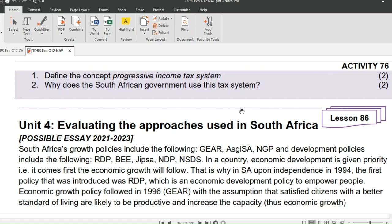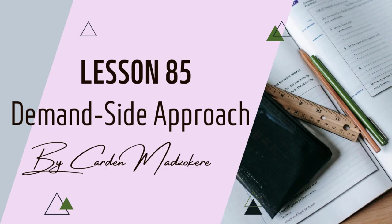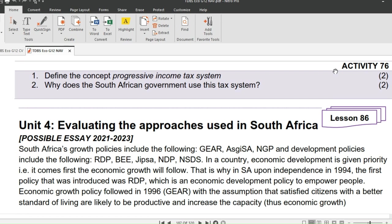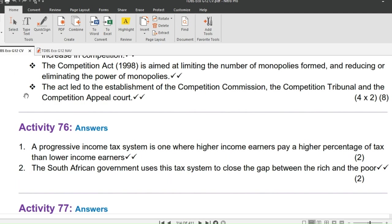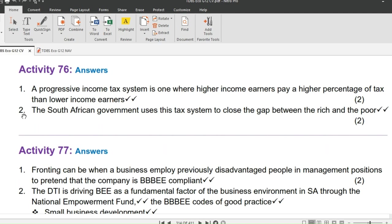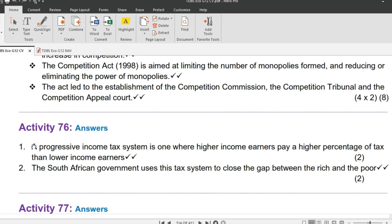As usual, we will start off with our homework activity 76 given in lesson 85, linked down below. Question 1: Define the concept Progressive Income Tax System, 2 marks. A Progressive Income Tax System is that which charges high-income earners more tax than low-income earners.